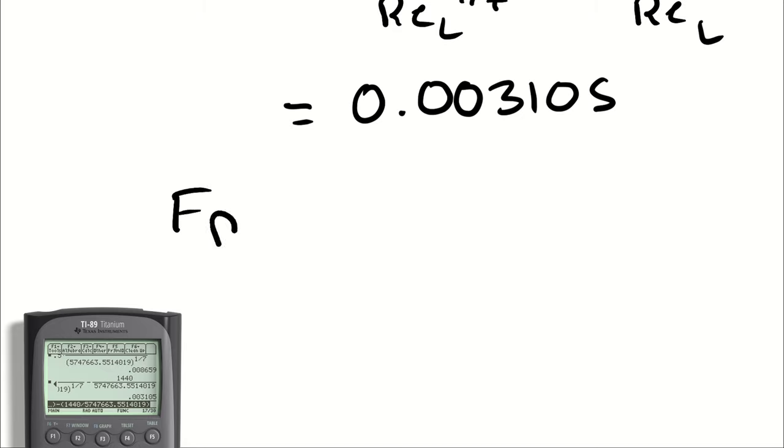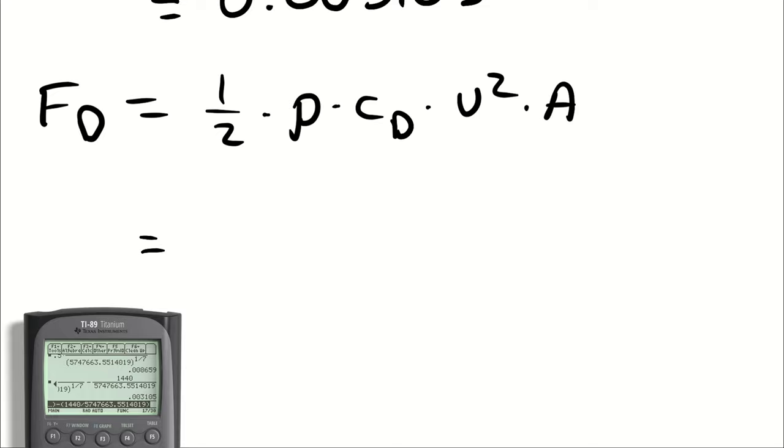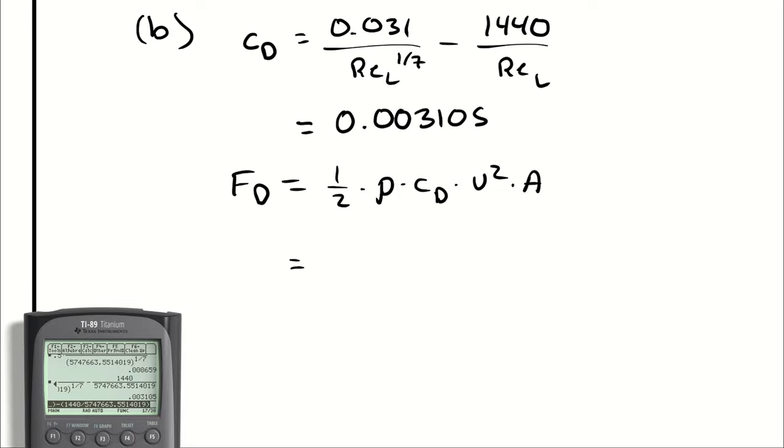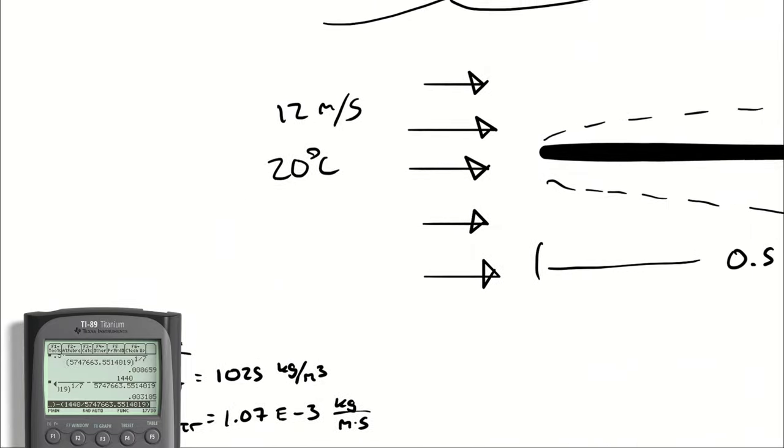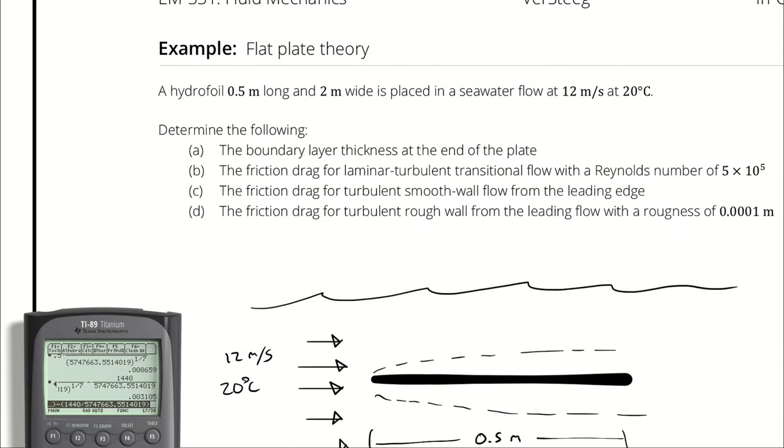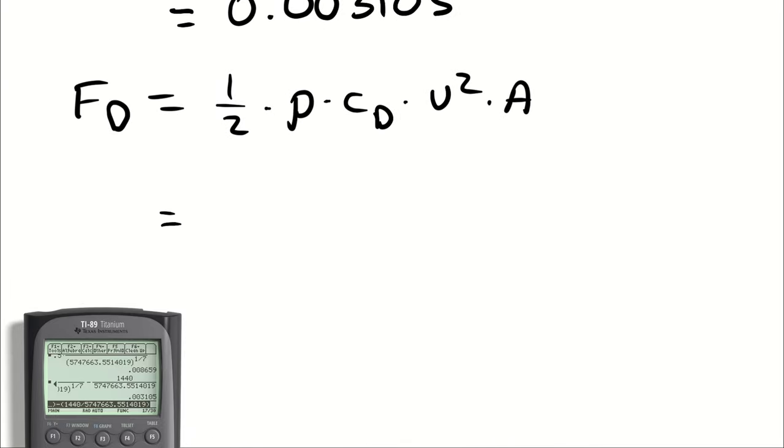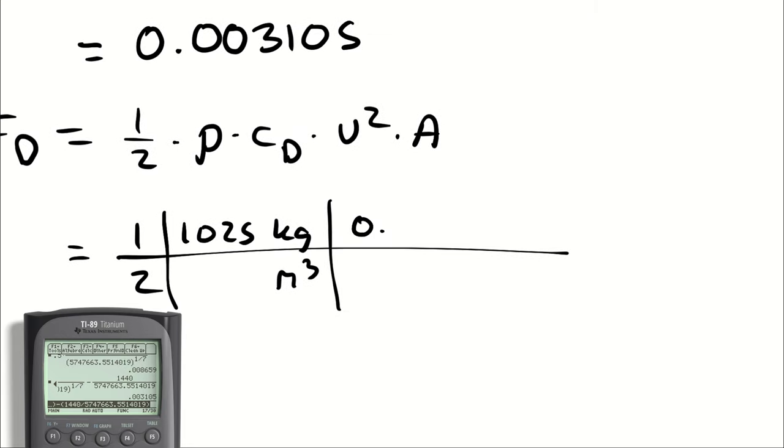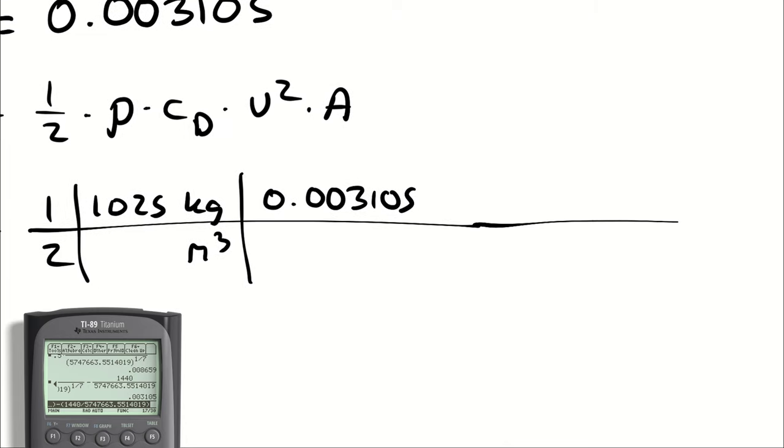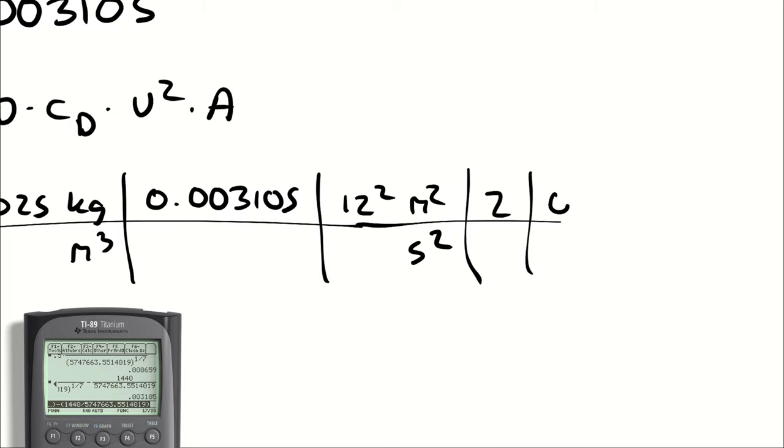Next, I can calculate the drag force. So, arbitrary arrangement of variables. We have 1/2 times the density first this time, times the coefficient of drag, times the velocity squared, times the area. My density is going to be the density of seawater, which we looked up. Coefficient of drag, we just calculated. Velocity is going to be 12 meters per second. And the area of effect is going to be 2 times 0.5 times 2 meters. It's 2 times because we have drag on both sides of our hydrofoil. So, that's 1/2 times 1,025 kilograms per cubic meter times 0.003105 times 12 squared meters squared per second squared times 2 times 0.5 meters.